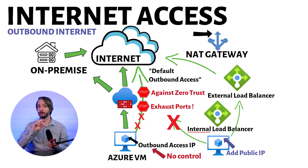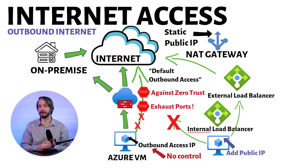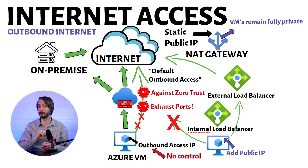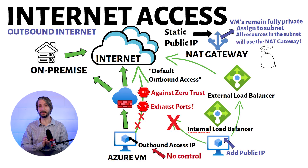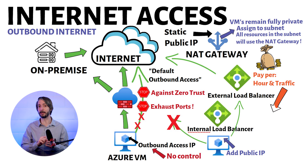However, the best solution, which is also officially recommended by Microsoft, is to use something called a NAT gateway. A NAT gateway simplifies the outbound internet connectivity for virtual networks. When configured on a subnet, all outbound connectivity uses the NAT's public IP addresses. With NAT, individual VMs do not need a public IP address and they remain fully private. In addition, this service is fully managed and resilient to failures. Simply put, all you need to do is create a NAT gateway and assign it to the subnet, and all resources in the subnet will automatically use this gateway for outbound internet access.